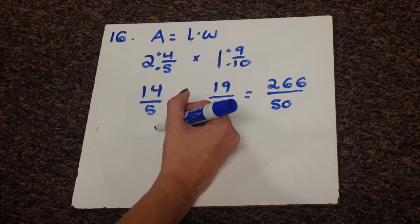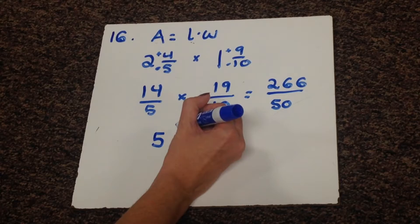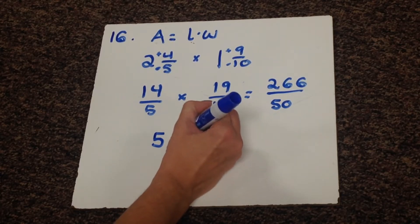Because 5 times 50 is 250, it goes in five times. I would have 16 left over, so 16 over 50.